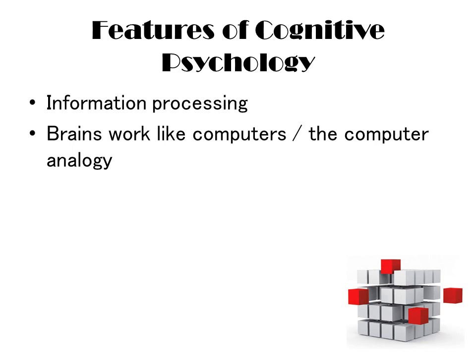There are two features of the cognitive approach, just like with the social approach. The first is the information processing model, and the second is the idea that brains work like computers, which is often referred to as the computer analogy model.